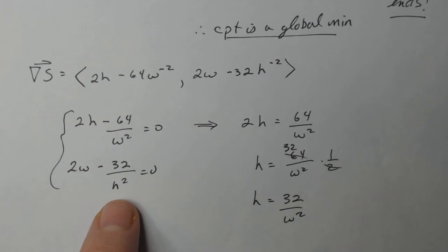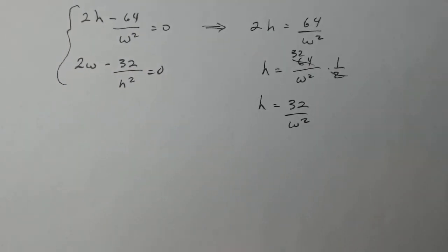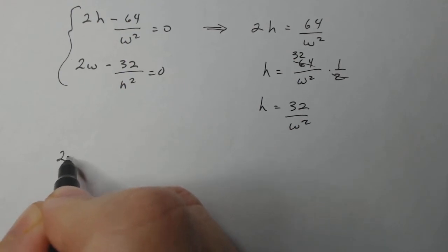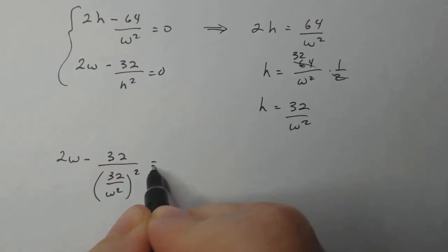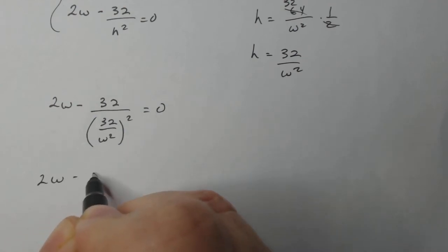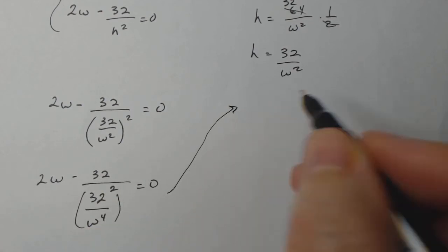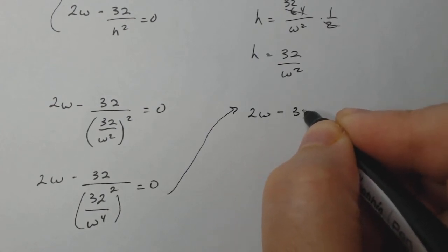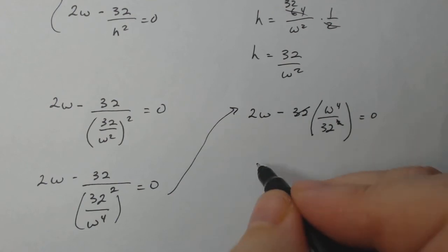Now I'm going to take that guy and plug it into H here. Be real careful when you do this kind of algebra. Take your time because if you start doing stuff in your head, you're going to screw up. Trust me, I've screwed up enough on this problem many years ago. So I have 2W minus 32, and I'm going to take what H is and make sure it's squared. So I have 2W minus 32 over 32 squared over W to the fourth. I'm going to take the reciprocal of this and multiply. 2W minus 32 times W to the fourth over 32 squared. That cancels. 2W minus W to the fourth over 32 equals zero.